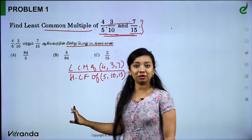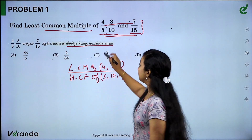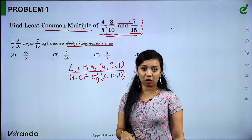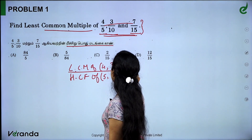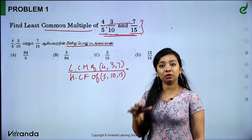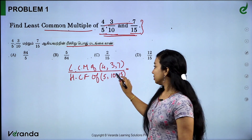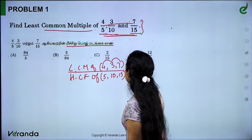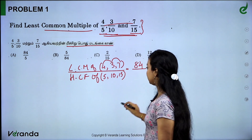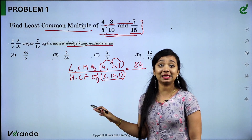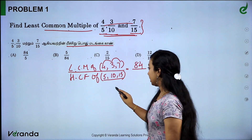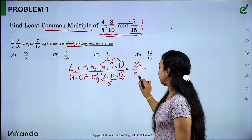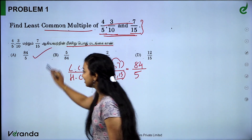So for fraction LCM, the formula is: LCM of numerators divided by HCF of denominators. LCM of 4, 3, 7 divided by HCF of 5, 10, 15. The HCF of 5, 10, 15 — the common factor is 5, so HCF is 5. LCM of 4, 3, 7 is 84. So the answer is 84 divided by 5. This is a Group 1 question and it's easy.